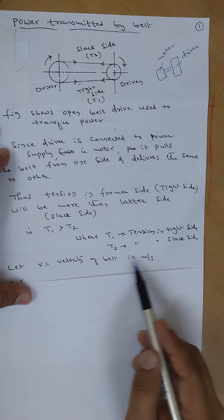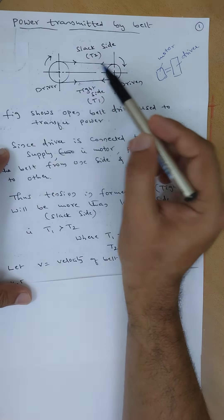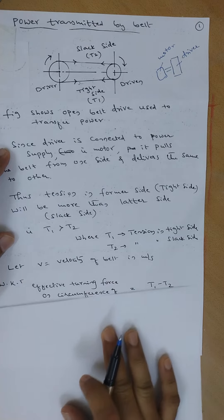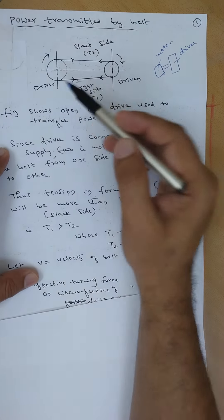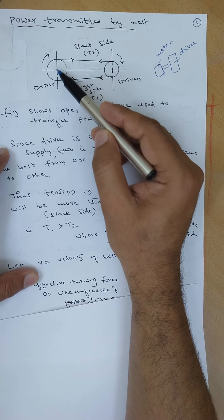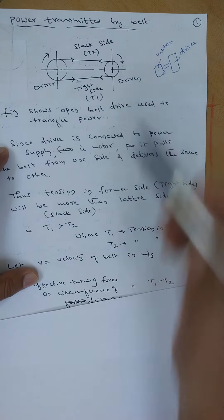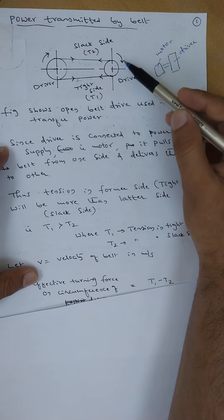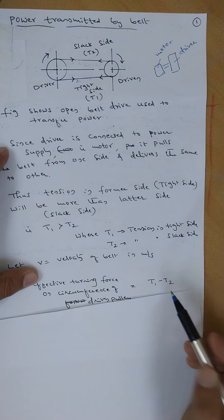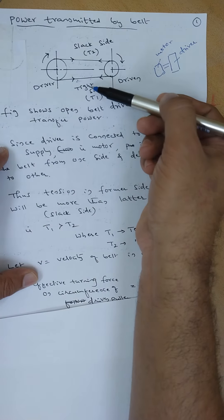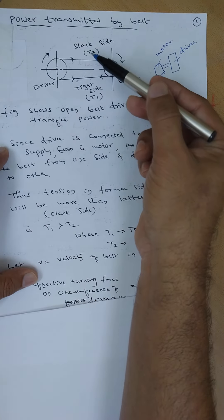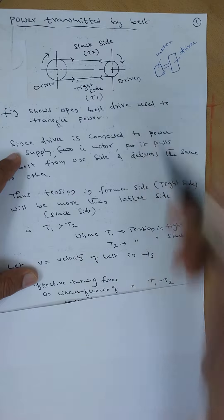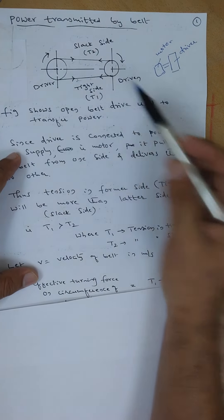Let V equal to the velocity of the belt in meters per second. If you want to deliver tension from driver to driven, what is the effective turning tension on the follower? That is T1 minus T2. The driver takes more force T1 and delivers less force, so the effective force is T1 minus T2. This is the effective force on the driven.